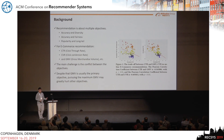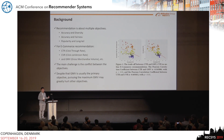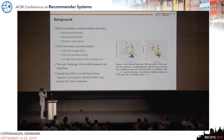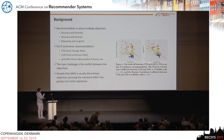Nowadays, recommender systems have been concerned with multiple objectives rather than a single one. Some examples include accuracy and diversity, accuracy and fairness, popularity, and the long tail.